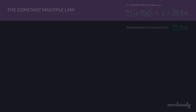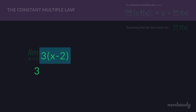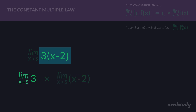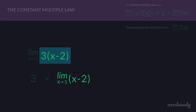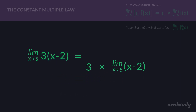Let's start with an example. We have the limit as x approaches 5 for 3 times x minus 2. We have 3, which is a constant, multiplied by the function x minus 2 — a great scenario to use the constant multiple law. The limit of a constant always exists because the limit of a constant is the constant, and the limit of this linear line will always exist.